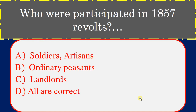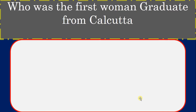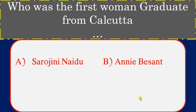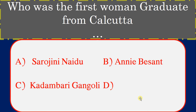Who was the first woman graduate from Calcutta? Options: Sarojini Naidu, Annie Besant, Kadambari Ganguli. Correct answer: Kadambari Ganguli.